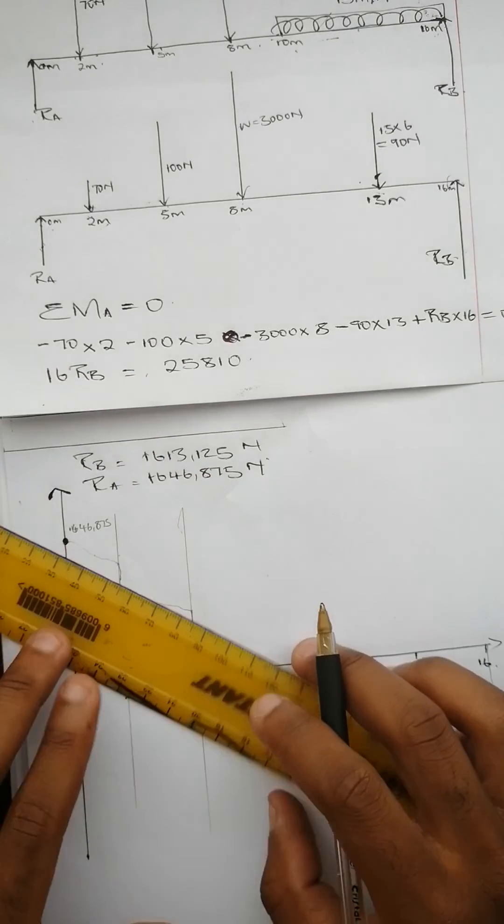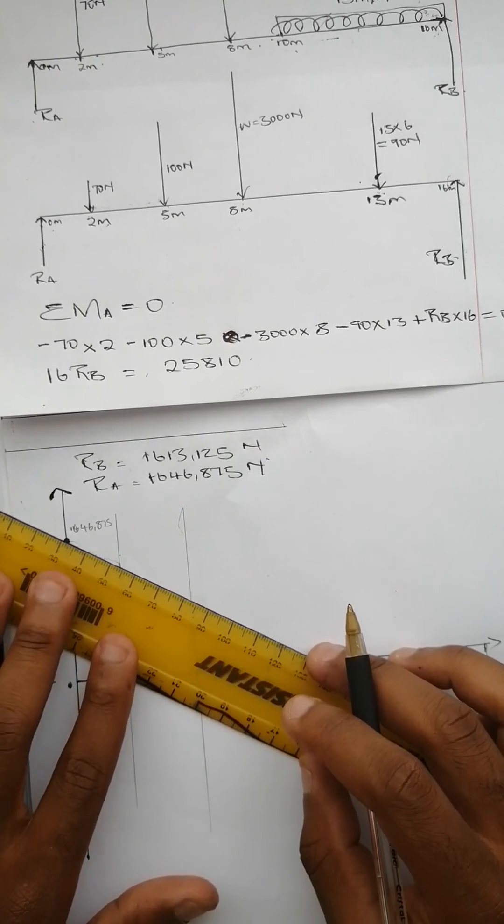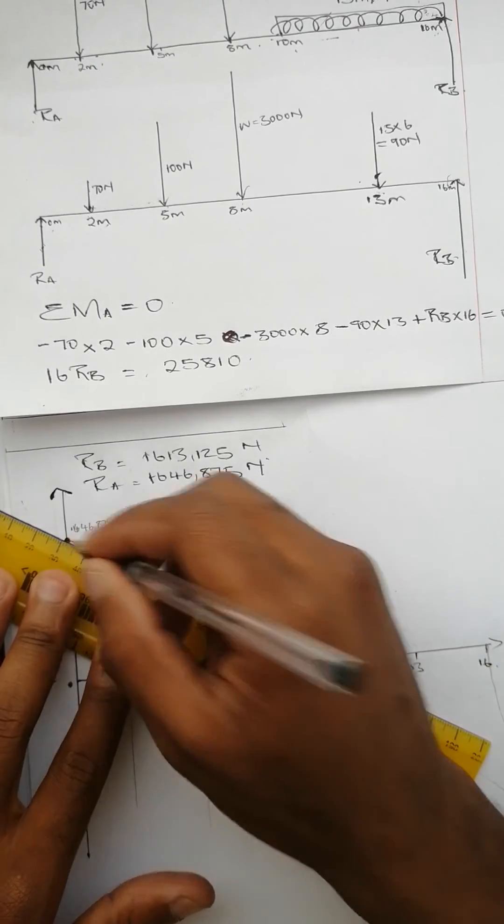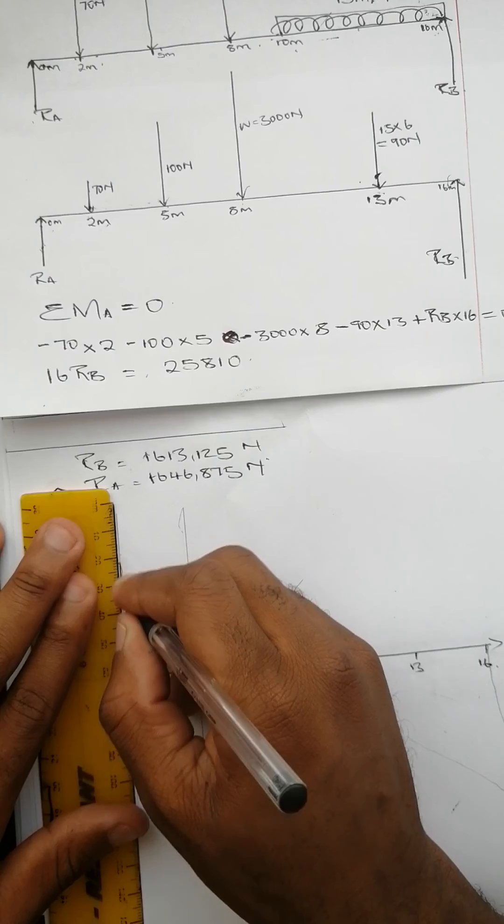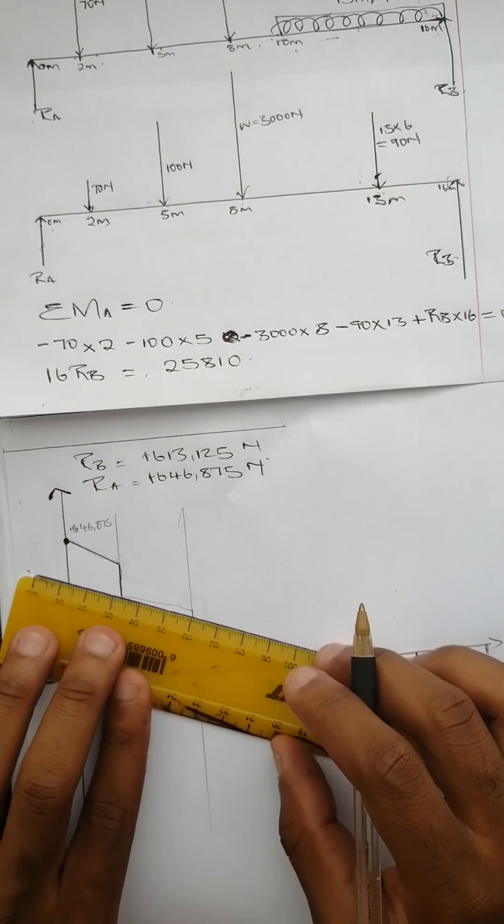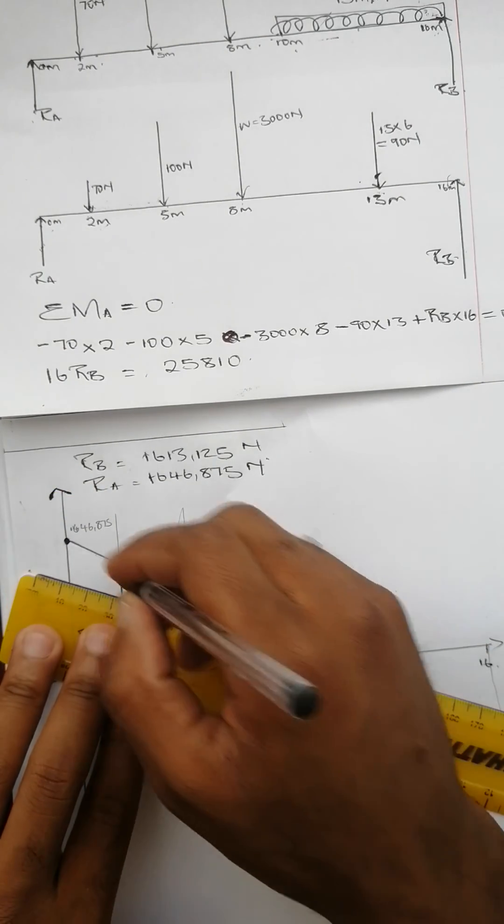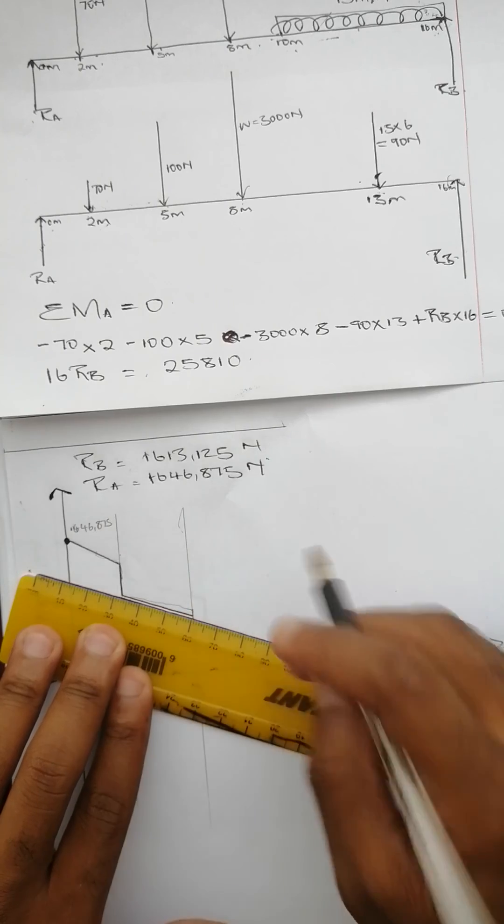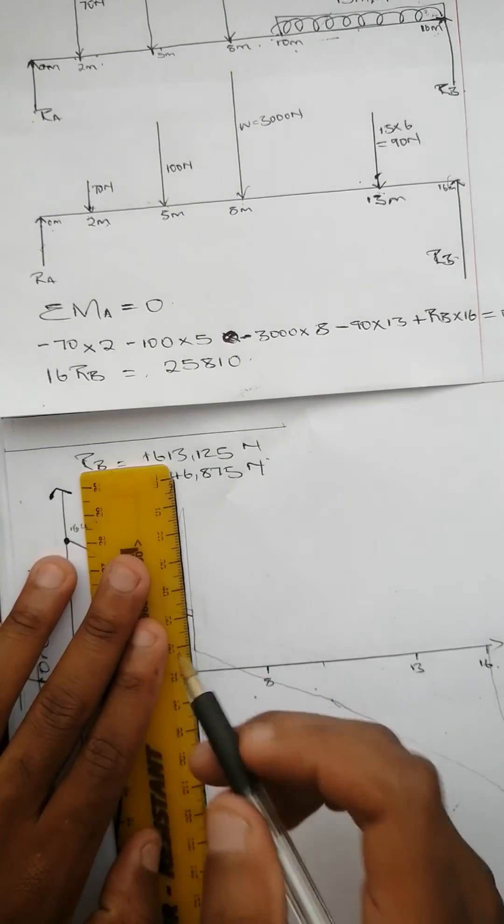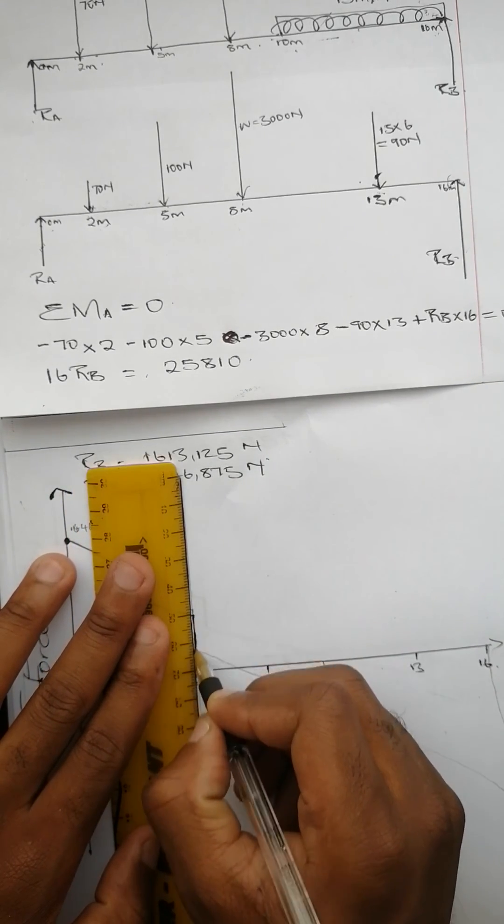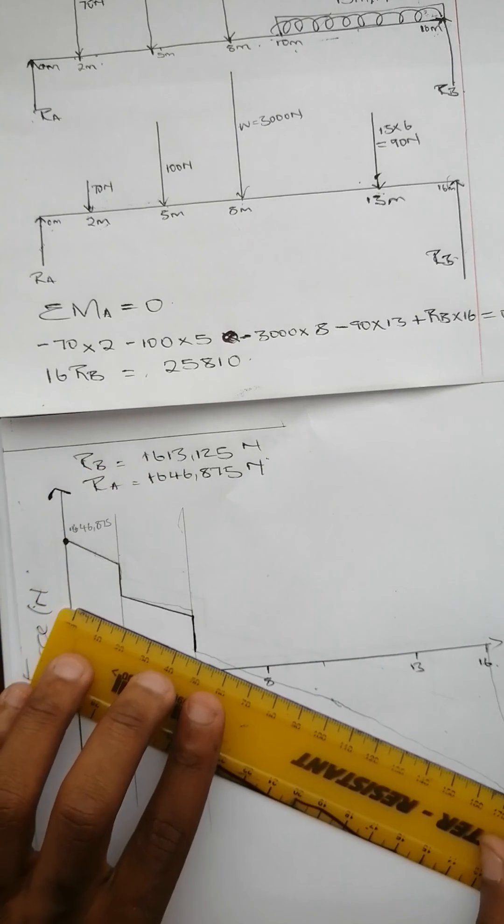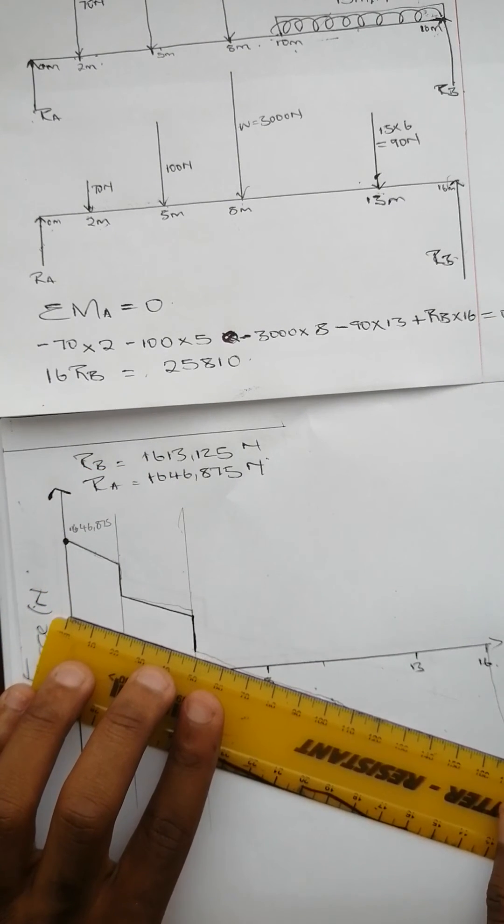Let's do that. From 0 to 2 meters, subtract 70, slant at the same gradient (this should be parallel), then at 5 meters subtract 100, slant at the same gradient.